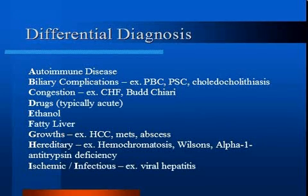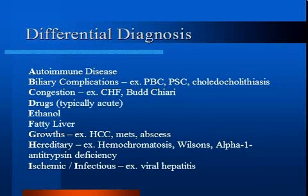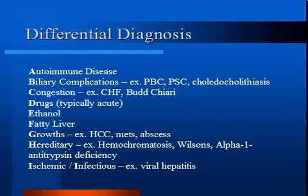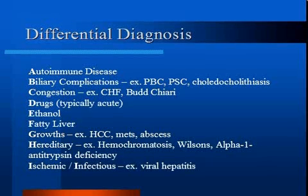Autoimmune disease is a diagnosis based upon the presence of elevated serum aminotransferases, absence of other causes of chronic hepatitis, and serologic or pathologic features suggestive of autoimmune hepatitis. Biliary complications include anything which obstructs the flow of bile acids through the bile ducts — examples include stones within the ducts, compression outside the ducts like pancreatic or gallbladder carcinoma, or inflammation of the ducts as seen in primary biliary cirrhosis or primary sclerosing cholangitis.